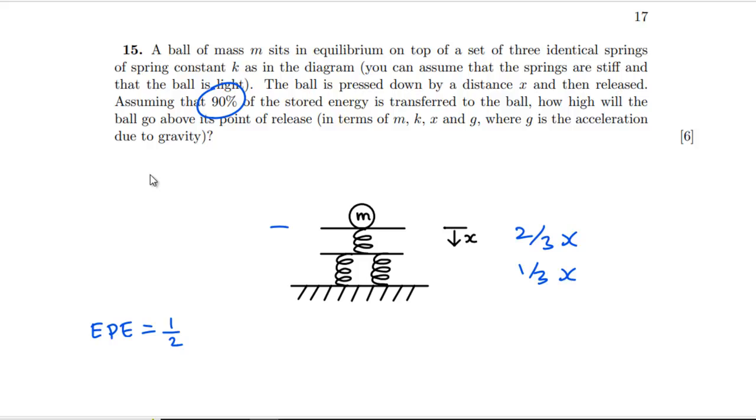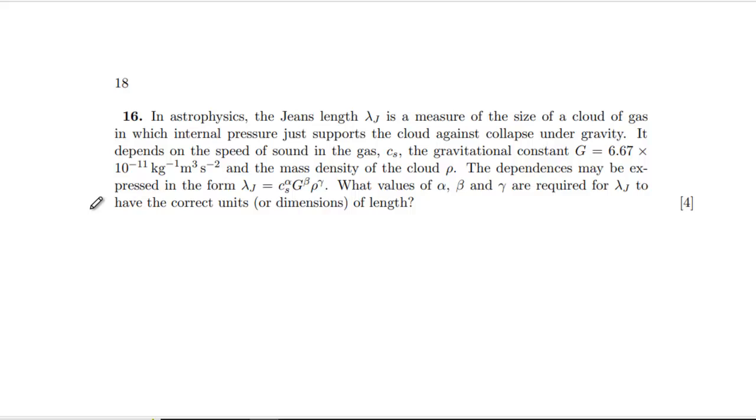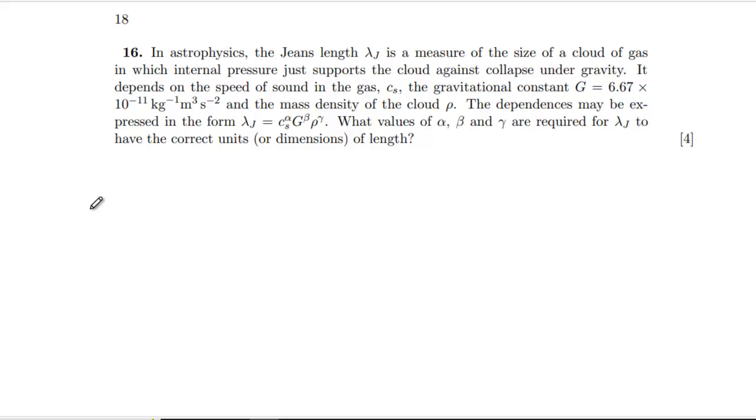So our EPE that we're going to get on this is a half KX squared. We're going to get a half of K two thirds of X squared for the top one. And then we're going to have two lots of a half of K one third of X squared. So that is going to be two ninths plus one ninth. So that's one third of KX squared. That is our EPE. And then we've just got 90% of that. So we're going to have nine tenths of one third KX squared is going to be equal to MGH. So H is going to be equal to three KX squared over 10MG. That was quick for six marks. But there you go. That's a spring question for you. This paper seems to be going boringly well at the moment.